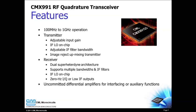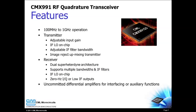What are some of the features of the CMX991? The 100 MHz to 1 GHz frequency range supports a variety of RF designs. The transmit section offers an input gain stage, on-chip IFLO, adjustable IF filter bandwidth, and an image-reject upconverter that provides great performance while relaxing external filtering requirements. The receive section uses a dual superheterodyne architecture for outstanding interference immunity, with support for multiple channel bandwidths, an on-chip IFLO, and two output signal choices for considerable flexibility. Uncommitted amplifiers allow elimination of external op-amps, saving board space and parts cost.